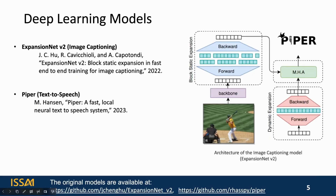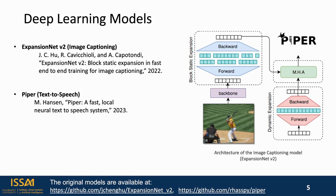Due to state-of-the-art performance on the Microsoft COCO dataset, we chose the ExpansionNetV2 model as the main image-captioning model for the project. The model relies on the SWIN transformer used as a backbone network to generate visual features from the input images. The model follows standard transformer architecture, but with the introduction of special static expansion and dynamic expansion modules, making the overall model even more efficient.